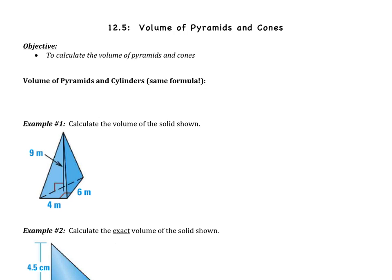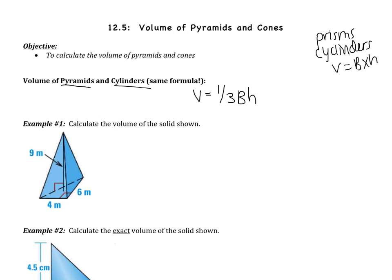Just as a review, volume is all the stuff inside of the figure. Surface area is the outside — it's like the wrapping paper — volume is all the stuff on the inside. We remember that the volume of prisms and cylinders used the same formula: volume equals the area of the base multiplied by the height. Well now, pyramids and cones also have the same formula. This time, volume is going to be one-third the area of the base multiplied by the height.